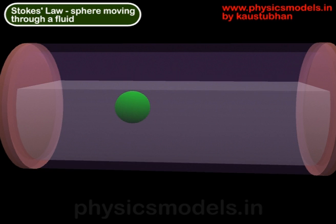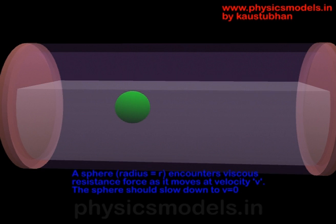If we move the sphere at a constant velocity V, the viscous resistance acting on that ball will slow it down. Ultimately, if the length of the cylinder is long enough, it will come to a standstill.